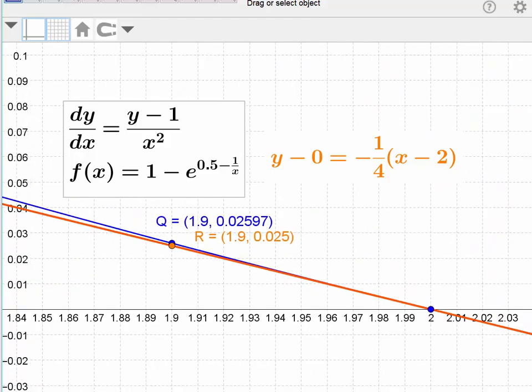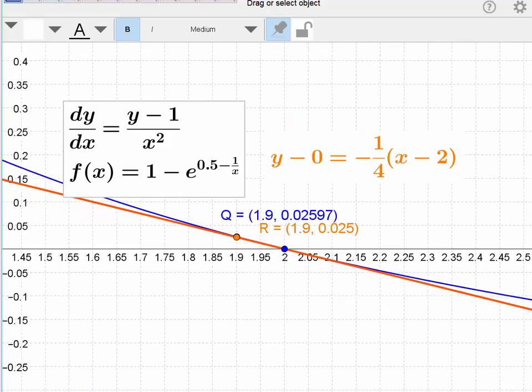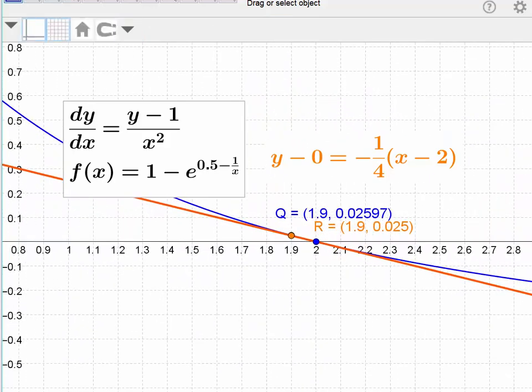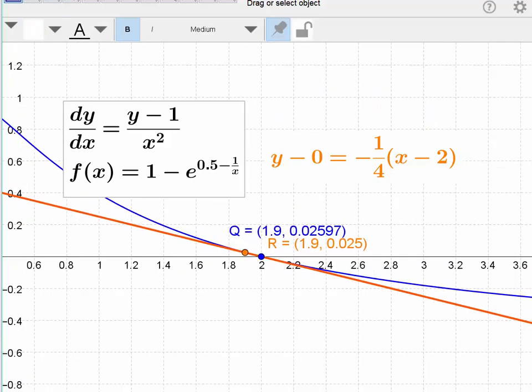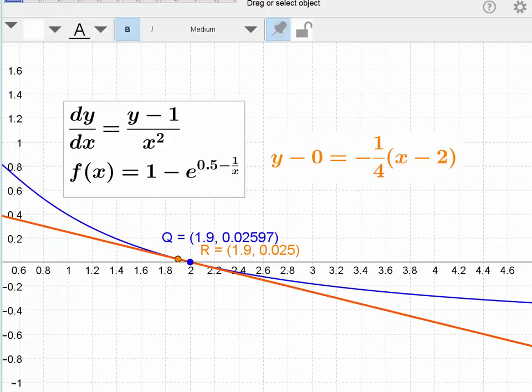Now, if I zoom back out, clearly the tangent line would not do a very good job of predicting or approximating values of the function far away from the point of tangency. So you want to make sure you use tangent line approximations only for values that are close to the point of tangency, x equals 2 in this case. Much more that could be said about tangent line approximations, but I'm hoping that's enough to satisfy you for right now.